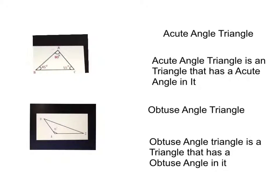Obtuse angle triangle: obtuse angle triangle is a triangle that has an obtuse angle in it. There is only one obtuse angle on here.